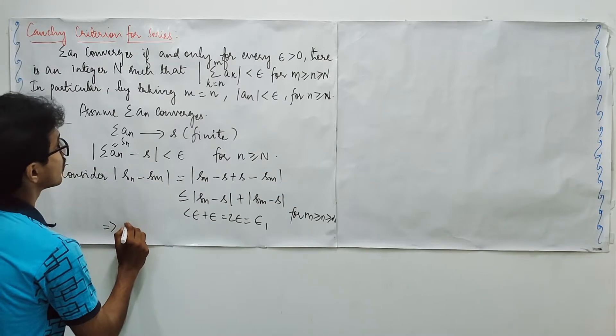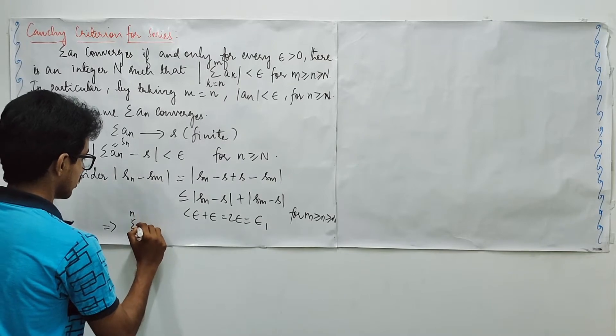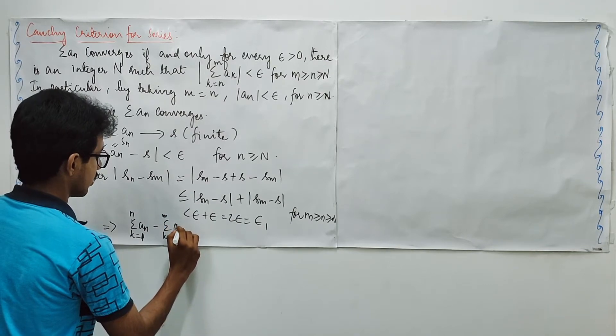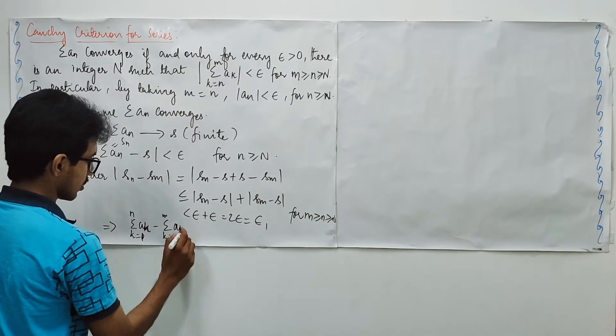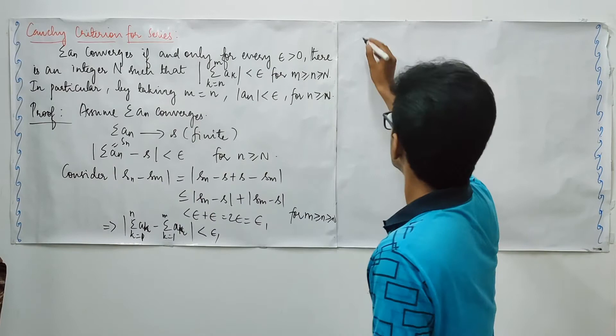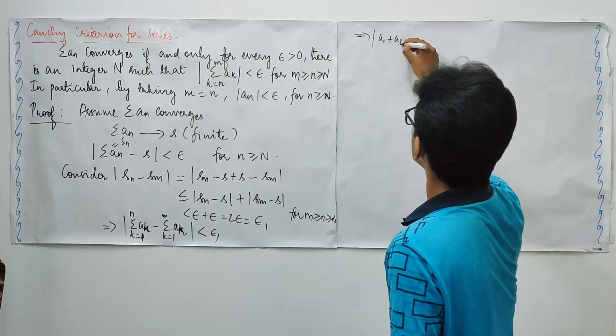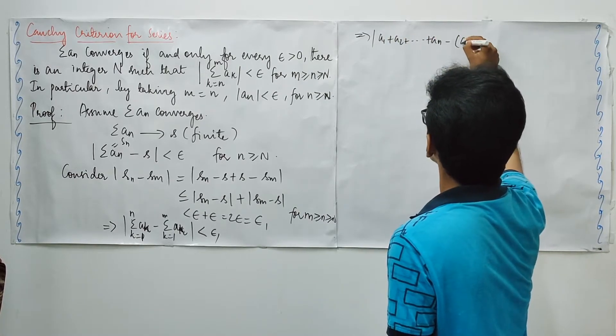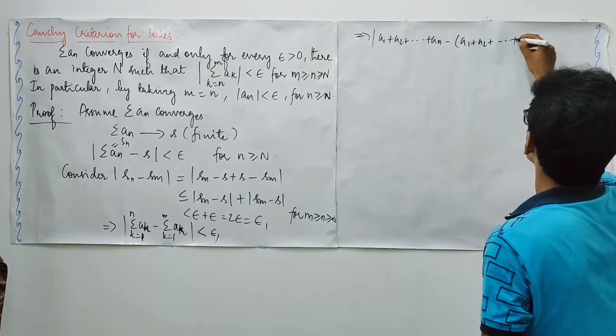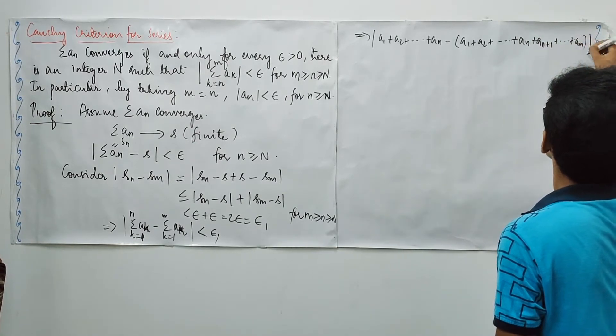And we are going to check these values for the case m bigger than or equals n bigger than or equals n_0. After this stage, we have chosen these two values. After this stage, this is going to be epsilon plus epsilon. It is going to be 2 epsilon. This is some negligible quantity.